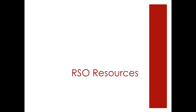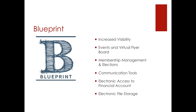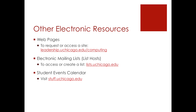Let's shift gears and talk about resources available to your RSO. Firstly, you have access to Blueprint. There are a number of benefits to using Blueprint, including increased visibility on campus, access to our virtual flyer board and event postings, links, roster and membership management, the ability to host online elections, a number of communication tools, electronic access to your RSO's financial accounts, and the ability to build an archive with electronic file storage. Other electronic resources include the ability to host a web page, create and manage an electronic list host, and post to the student events calendar. Links to all of these resources are provided in the dig deeper section of this module.